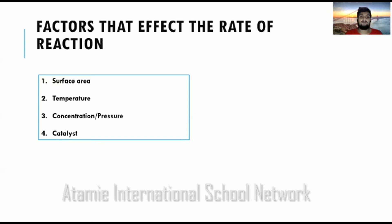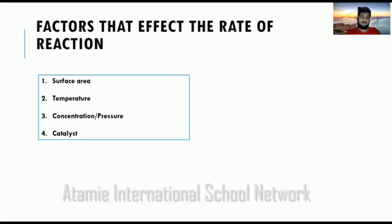There are certain factors where you can change all of those and alter the rate of the reaction. Some of the factors are: surface area — if you change the surface area for the reaction, you can achieve it; if you change the temperature, you can achieve it; if you change the concentration or pressure, you can also change the rate of the reaction; and also the use of a catalyst. We'll discuss all of these factors in the upcoming slides in detail.